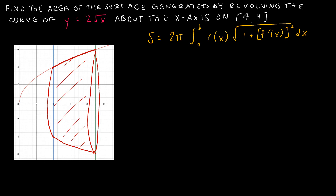The interval is from 4 to 9, so I have 2π integrated from 4 to 9. Now I need to figure out r(x). Since I'm rotating about the x-axis, r(x) is just the radius, which is the y-value of the function. The y-value is equal to 2√x, so 2√x goes in for r(x).